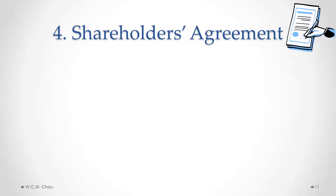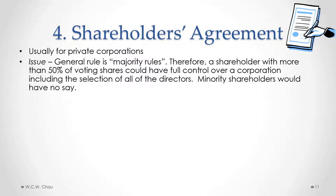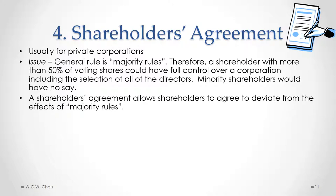A shareholders agreement is typically used with private corporations. The issue it is meant to address is the general rule that majority rules — specifically, the shareholder with more than 50% of the voting shares can impose their will and have full control over a corporation without any say from the minority shareholders. With a shareholders agreement, it allows the minority shareholders to have some role or influence as agreed to within the shareholders agreement.